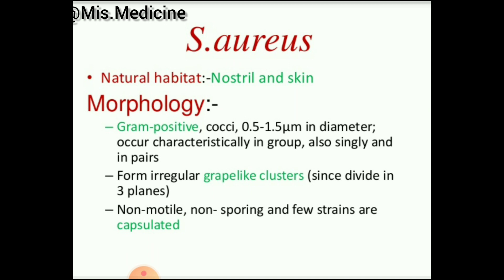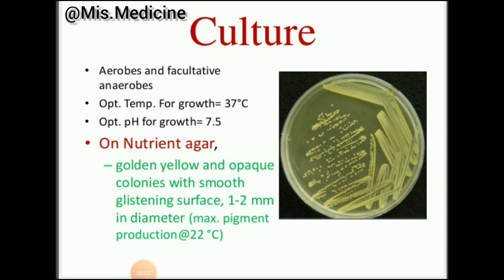Staphylococcus aureus natural habitat is the nostrils and skin. Its morphology: they are gram-positive cocci with a diameter of 0.5 to 1.5 micrometers. They occur in groups, also singly or in pairs, forming irregular grape-like clusters. They are non-motile, non-sporing, and a few strains are capsulated.